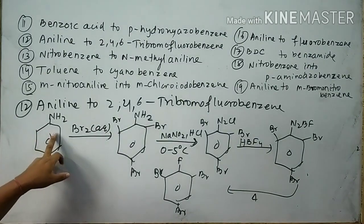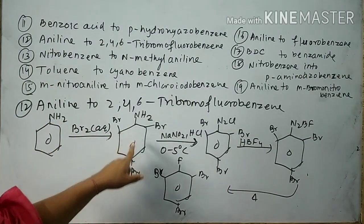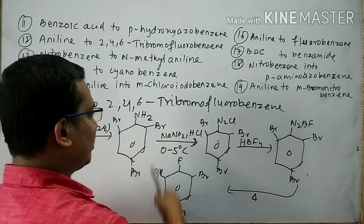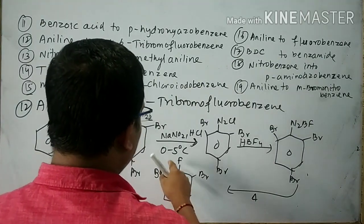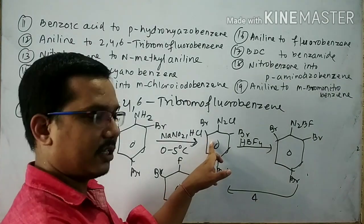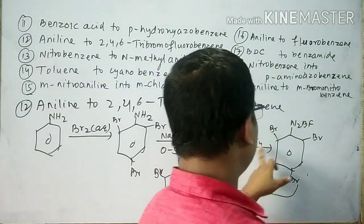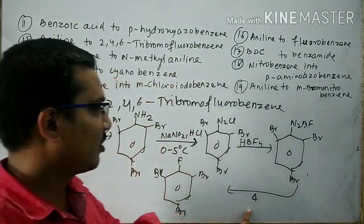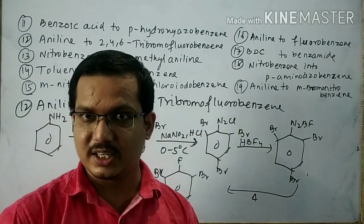To repeat: aniline reacts with aqueous bromine to form 2,4,6-tribromoaniline. This reacts with NaNO2 and HCl at 0 to 5 degrees centigrade to form the diazonium product. The diazonium product reacts with HBF4 to give benzene diazonium fluoroborate. On heating, 2,4,6-tribromofluorobenzene is formed.